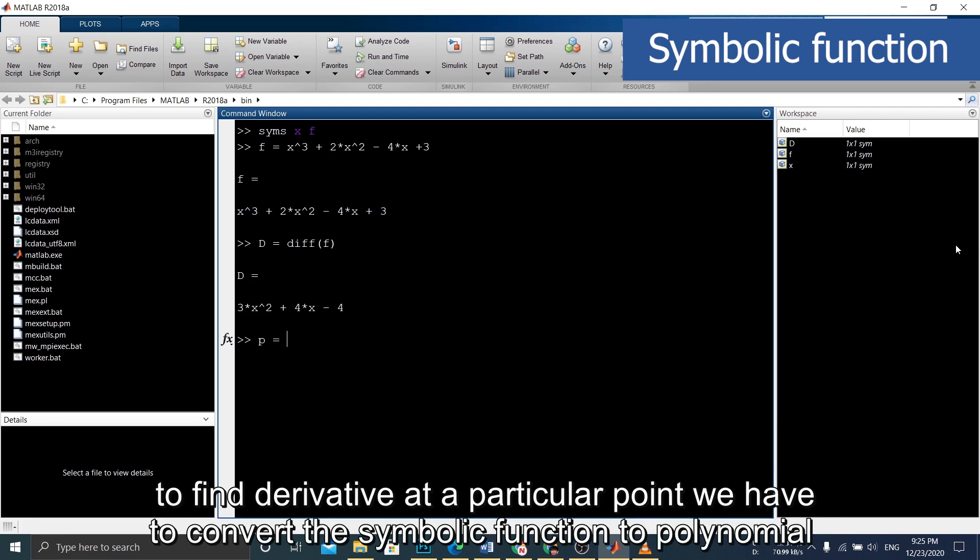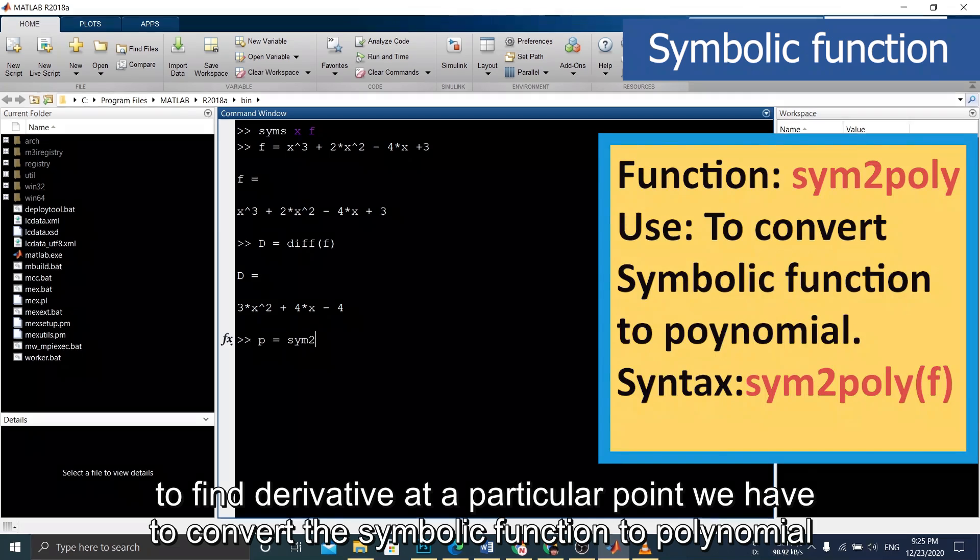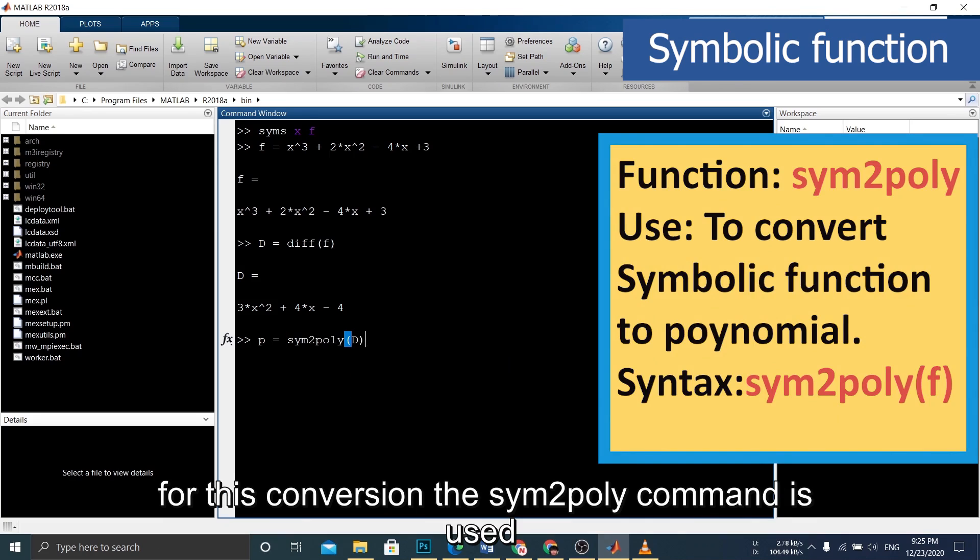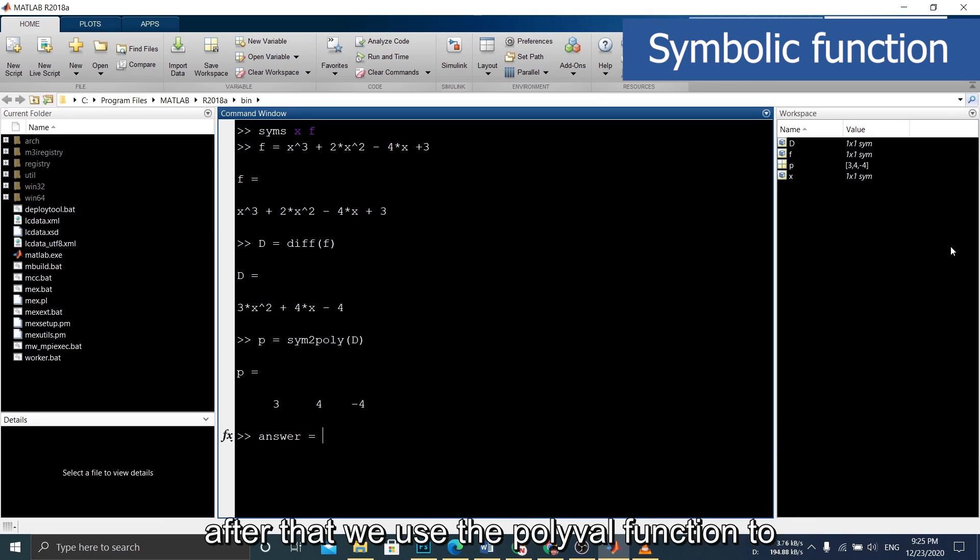To find the derivative at a particular point, we have to convert the symbolic function to a polynomial. For this conversion, the sym2poly command is used. After that, we use the polyval function to calculate the derivative at x equals 2.